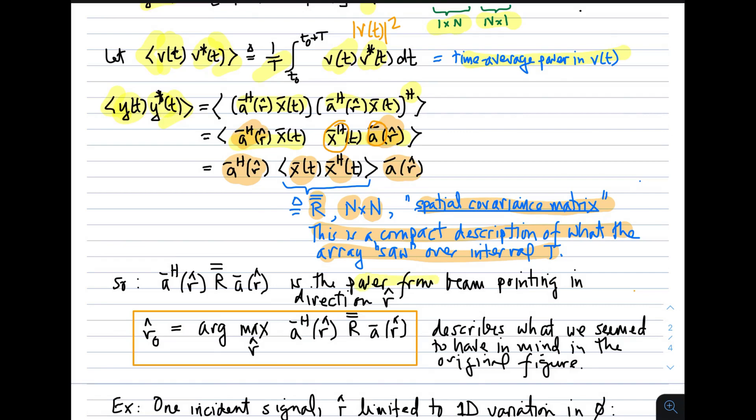Following through, the power from the beam pointing in direction R hat can now be given by the spatial covariance matrix, which is left and right multiplied by the steering vector associated with the direction R hat. Now we can describe what we had in the figure shown at the beginning as the following mathematical statement: our best guess at the angle of arrival is given by argmax with respect to any possible angle of arrival of this quantity, spatial covariance matrix left and right multiplied by the steering vector.